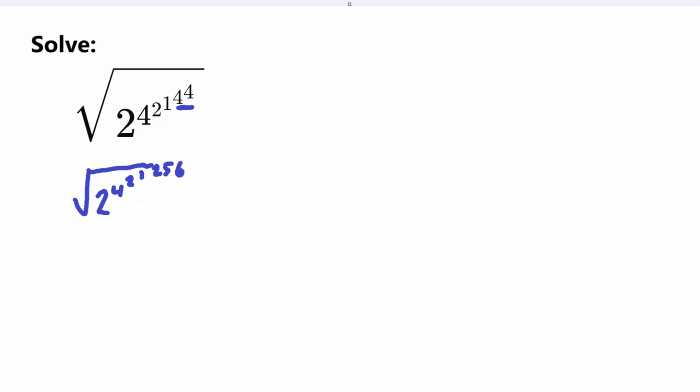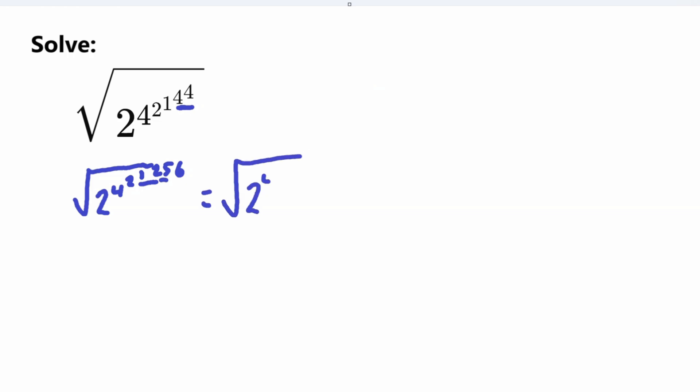Working right to left, now we do 1 to the power of 256. You may think we have to multiply 256 times, but 1 multiplied by itself is simply 1. It doesn't matter how many times you multiply 1 by itself — whether 1 time, 100 times, or 256 times — the answer will always be 1. So 1 to the power of 256 is simply equal to 1. Now we have 2 to the power of 4, to the power of 2, to the power of 1.